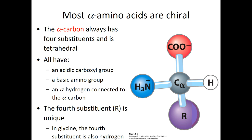Our alpha amino acids — we term them alpha amino acids because we get this naming from basically the way sugars are named. We take a Fisher projection or a ball-and-stick method. Either way, we put the most oxidized carbon at the top and then put all of our carbon chains in a line. The carbon right next to our most oxidized carbon is what we call our alpha carbon.